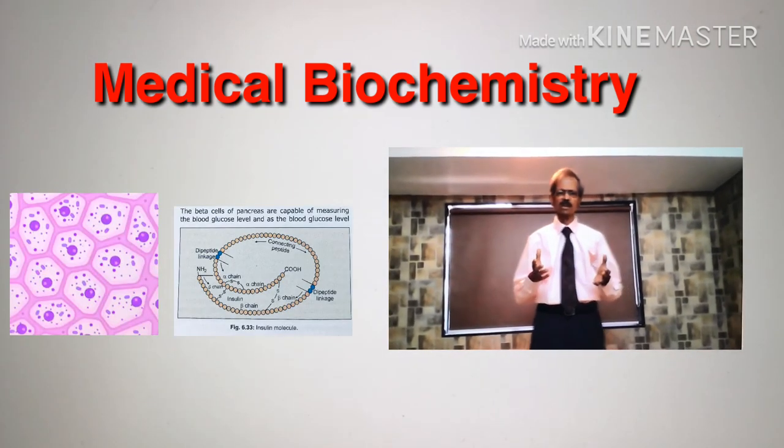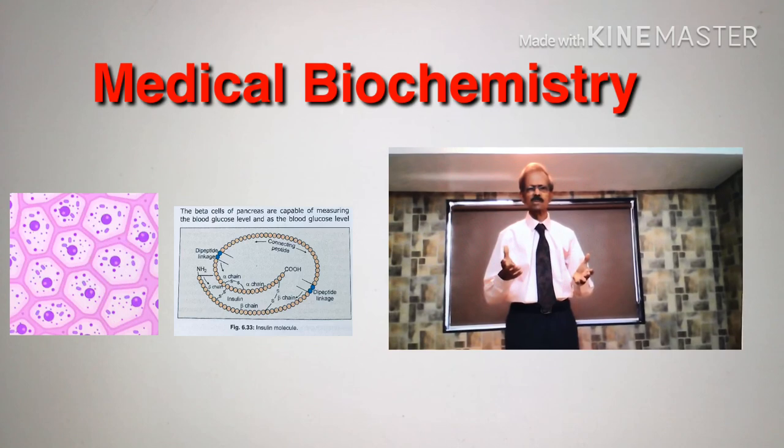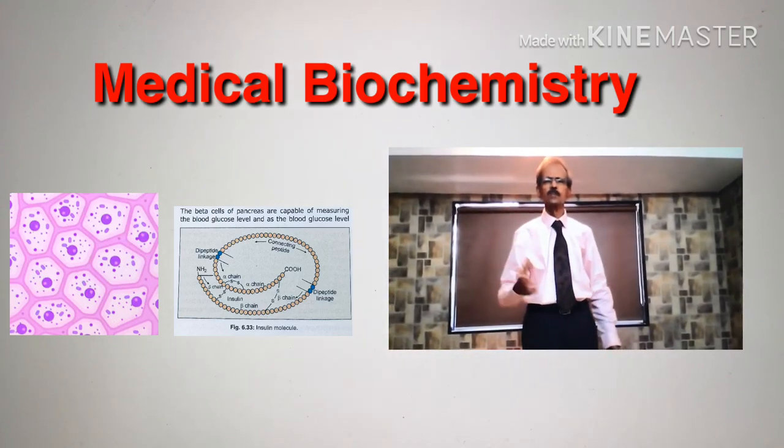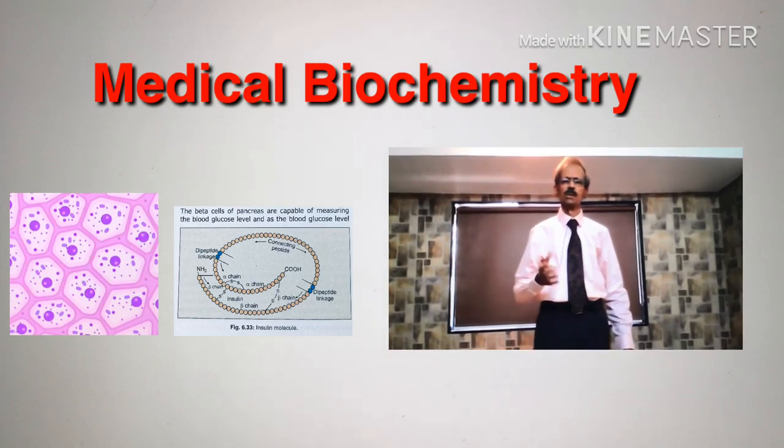One example of disturbed metabolism is when body cells do not get sufficient insulin to use glucose molecules to produce energy.